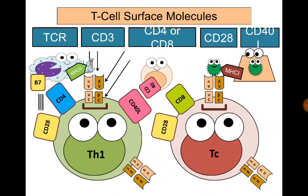To summarize, each T-cell has several molecules on its surface: T-cell receptor to attach to its specific antigen; CD3 helps in signal transmission; CD4 on the T-helper cell surface or CD8 on the T-cytotoxic cell surface; CD28 to bind to B7 molecule on the surface of the antigen-presenting cell; and CD40 ligand to attach to CD40 molecule on the surface of B-lymphocyte.